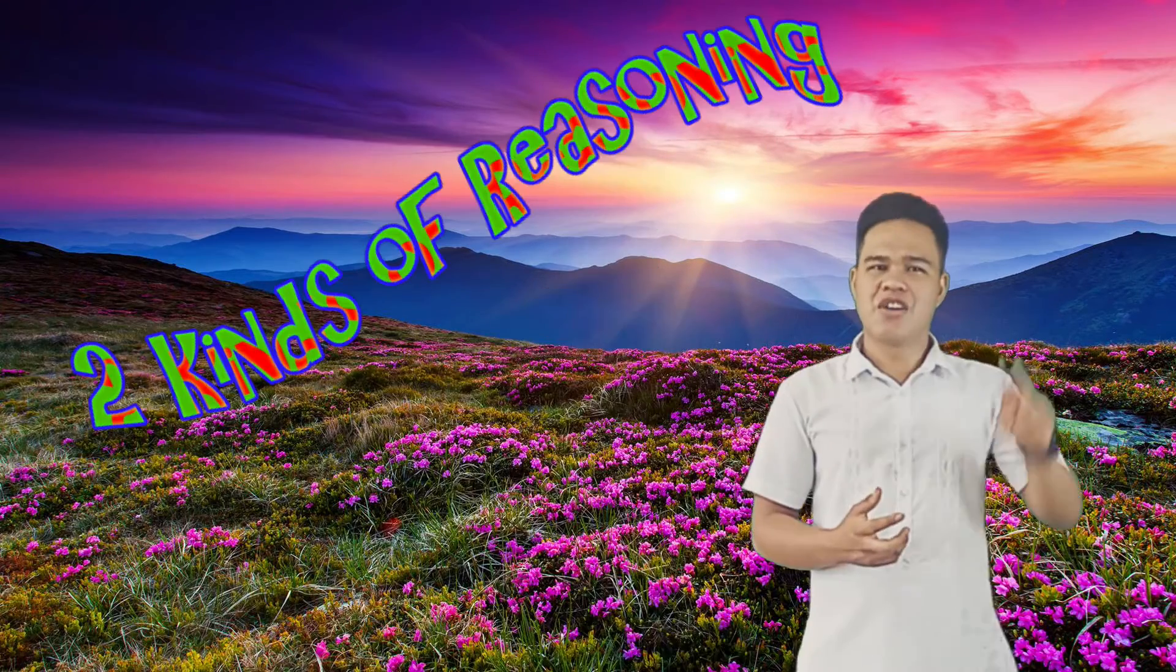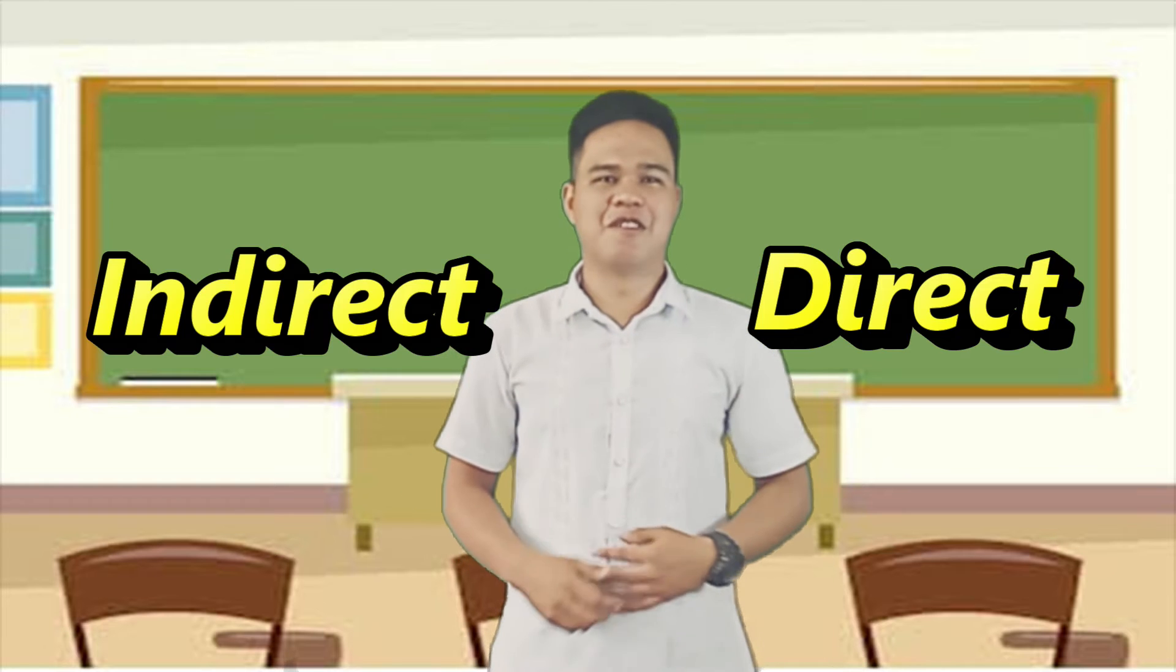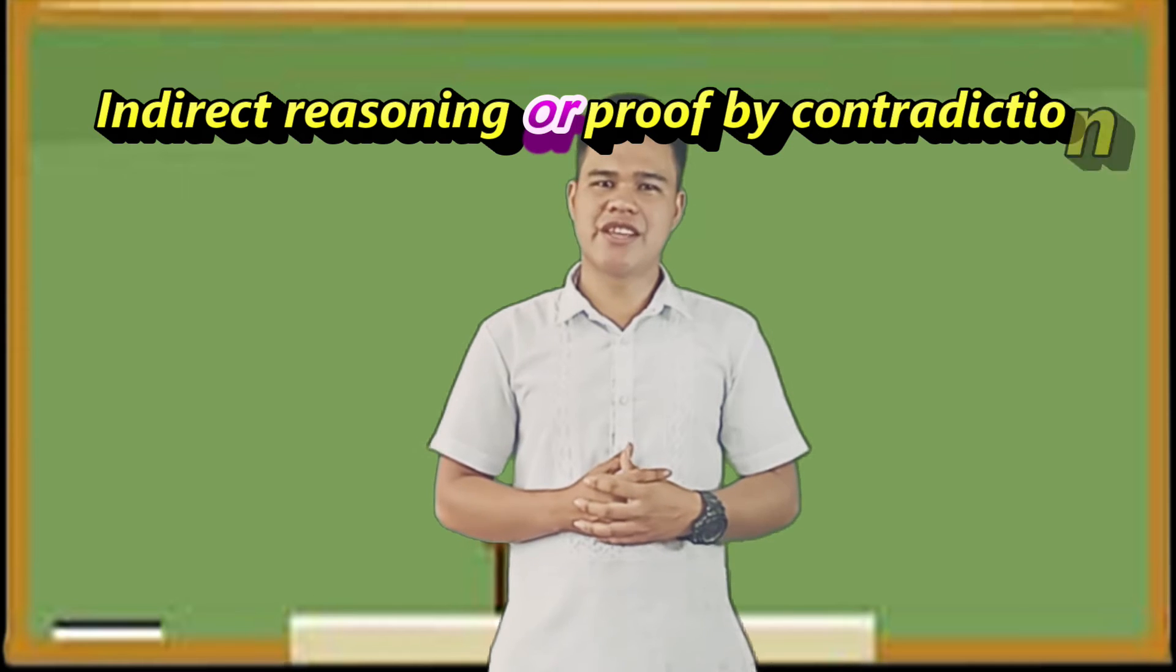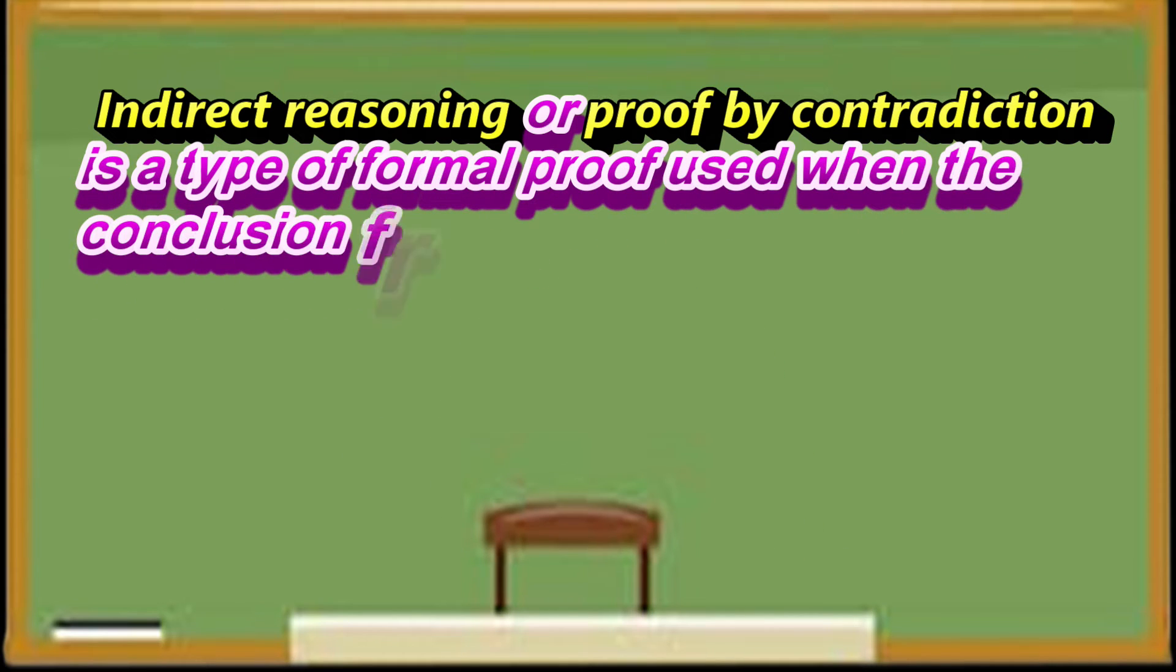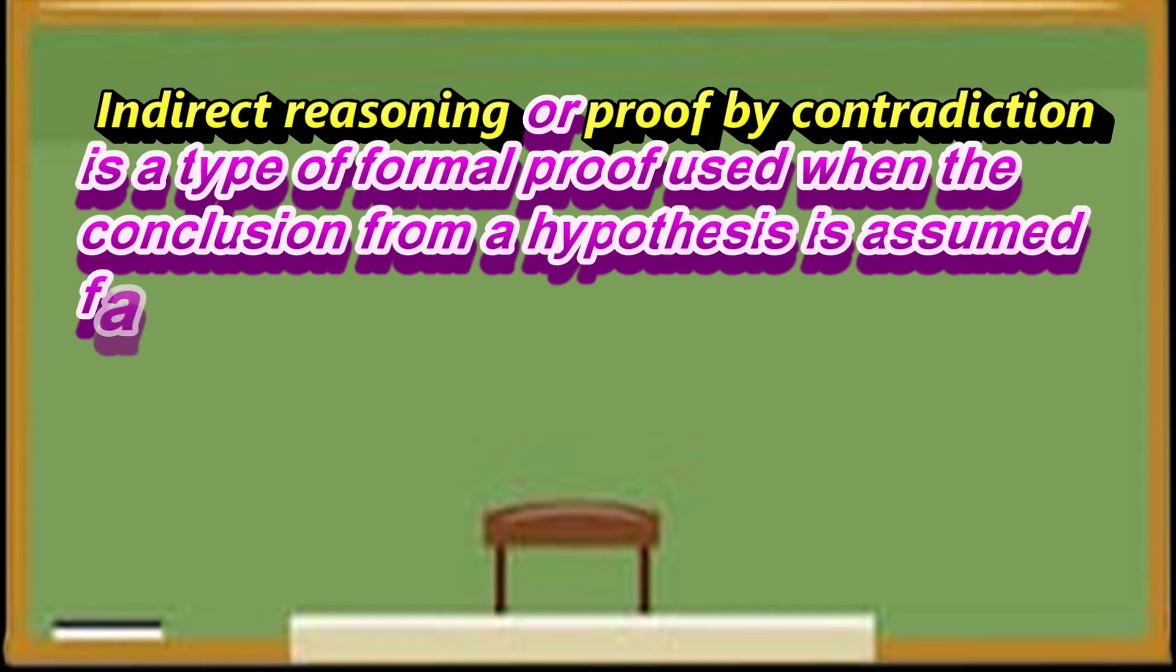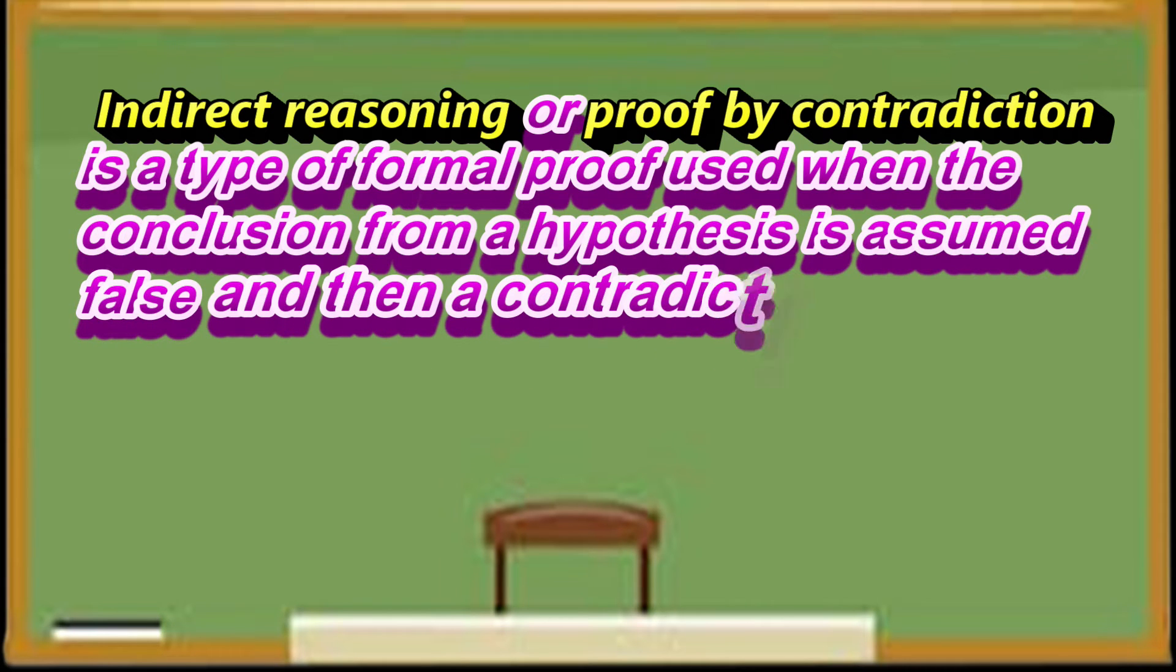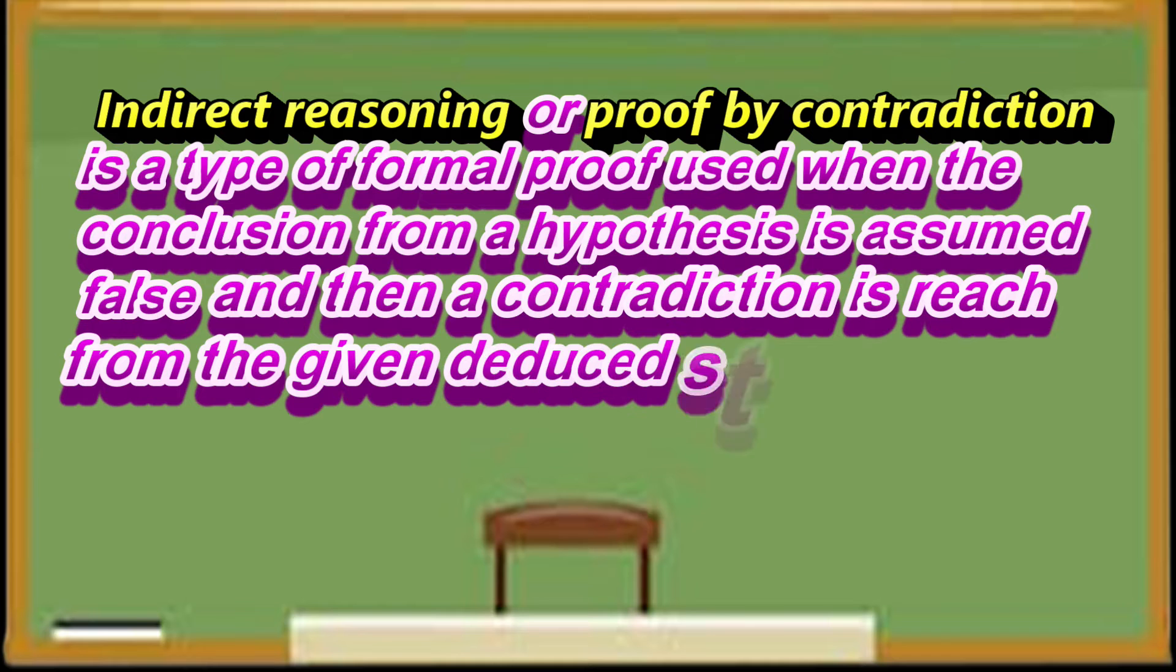This morning, we are going to discuss two kinds of reasoning, namely direct and indirect reasoning. Indirect reasoning, or proof by contradiction, is a type of formal proof used when the conclusion from a hypothesis is shown false and then a contradiction is reached from the given statements.